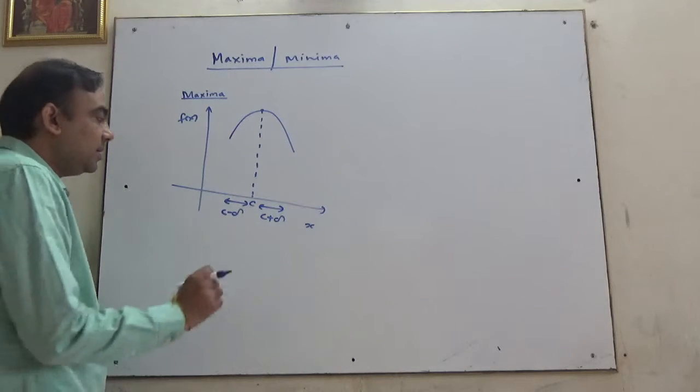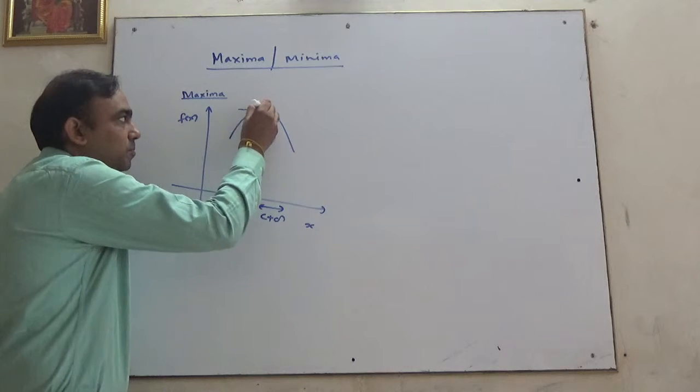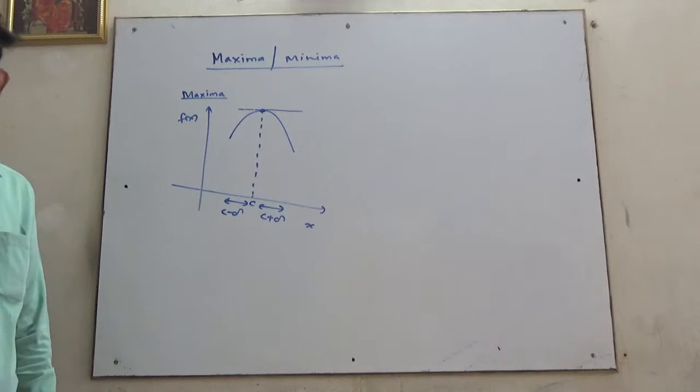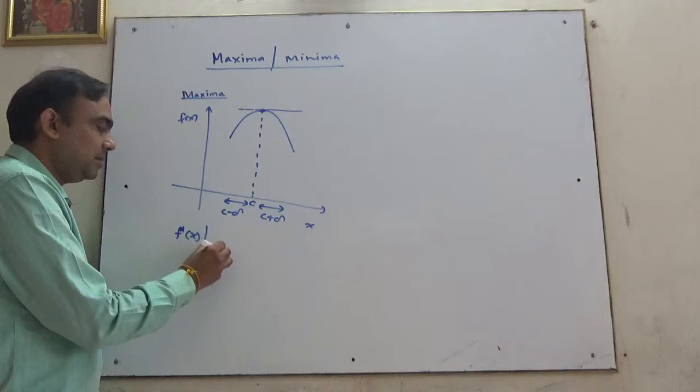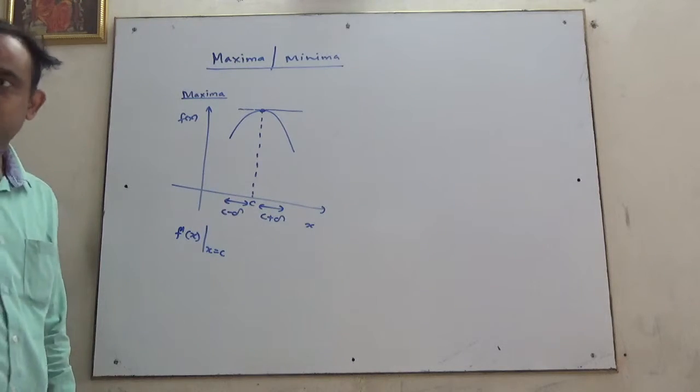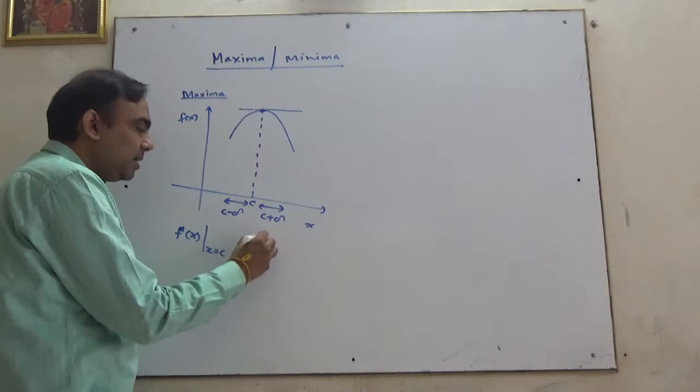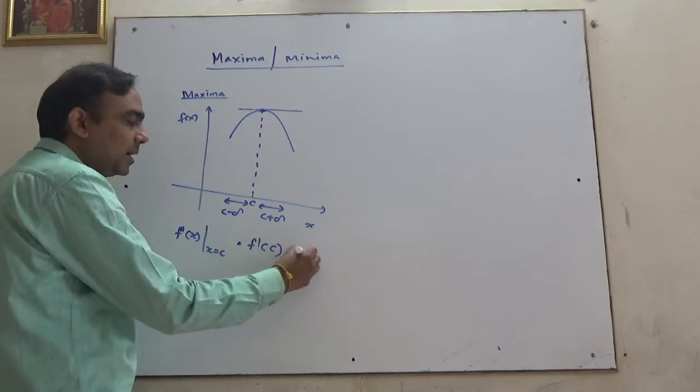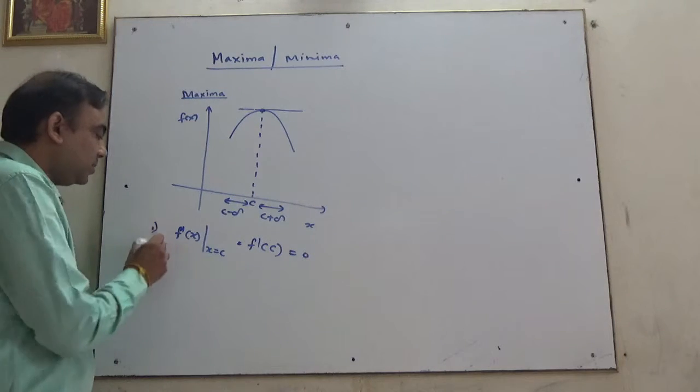Now we see here the slope. What is slope? F dash x. F dash x at x equals c, meaning the tangent at that point, its slope, or we can say F dash c. If this equals zero, that's the first thing. Second thing: